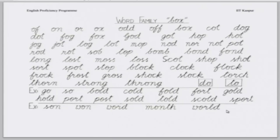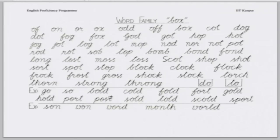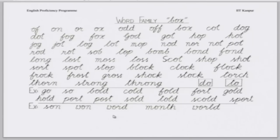And now let us go to another exceptional sound which is more common. Akshat. Go, show, bold, cold, fort, gold, hold, host, sold, toll, scold, sport. Beautiful. Shashank, the last one. Sun, won, world, month. So one major sound pattern of O is like 'box', two minor sound patterns are 'bold' and 'word', and one very rare pattern is 'do/to'.